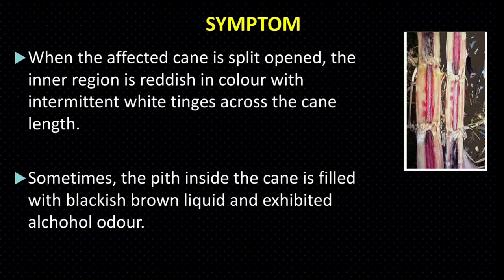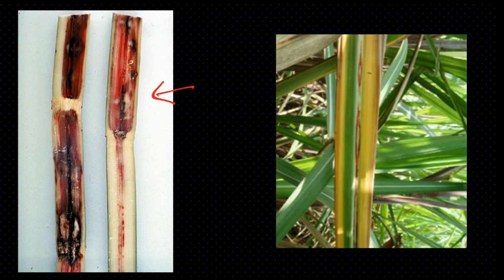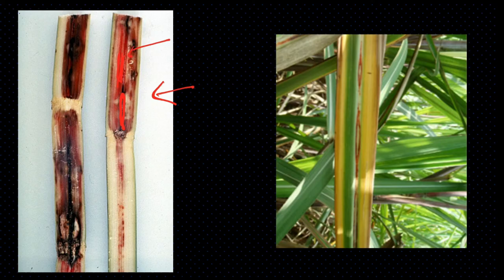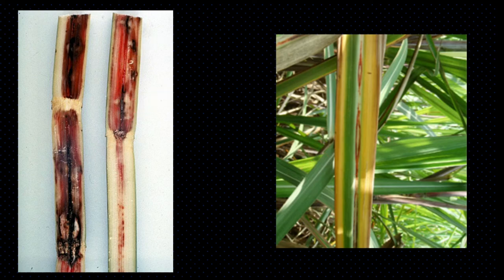The inner color eventually becomes dark brown, and an alcohol odor (sour smell) develops — this is because sugarcane has high sugar content and pathogen attack leads to anaerobic respiration producing foul smell. This is the red rot symptom: splitting reveals red discoloration that later turns brown or black, with white tissue intermittently present, and the leaf spot center becomes straw-colored with reddish-brown margins.